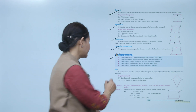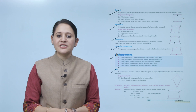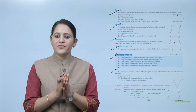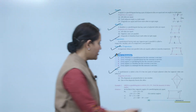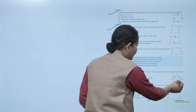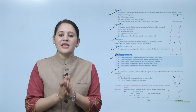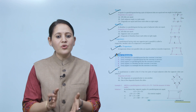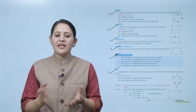Next is kite. A quadrilateral is called a kite if it has two pairs of equal adjacent sides but opposite sides are different. Here PS and PQ are equal, and SR and QR are equal. Properties of kite: the diagonals are perpendicular to one another, and one of the diagonals bisects the other.